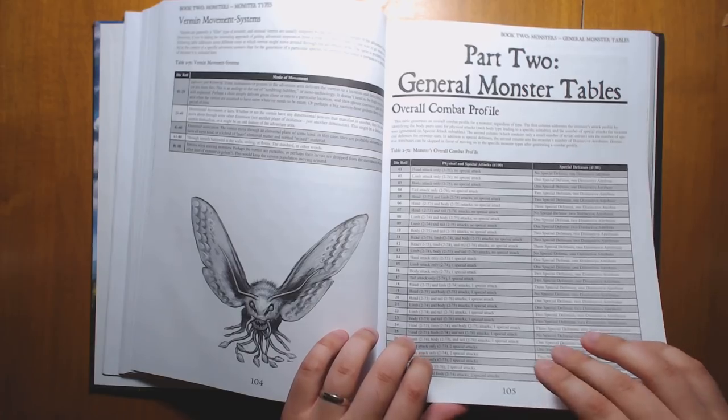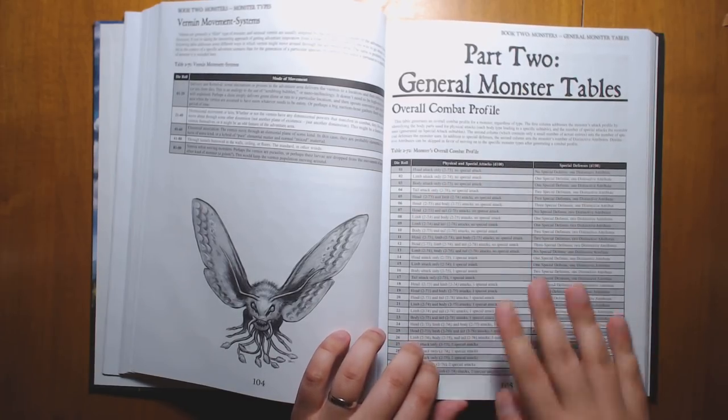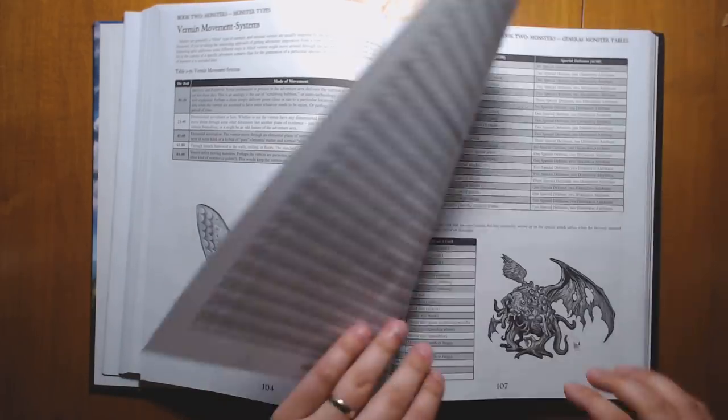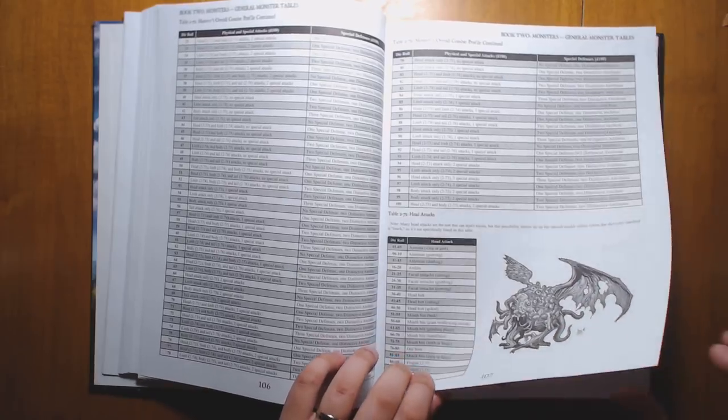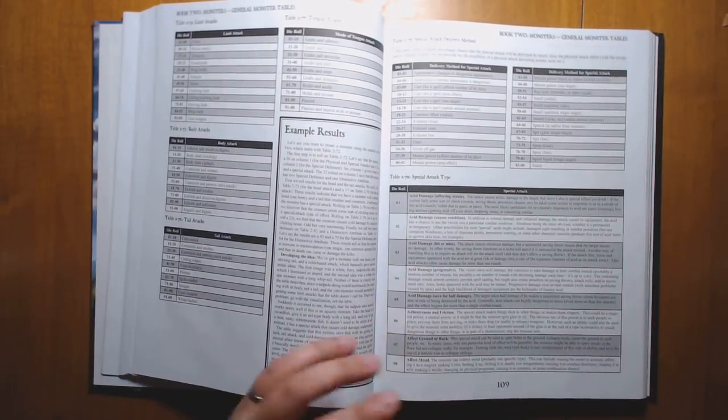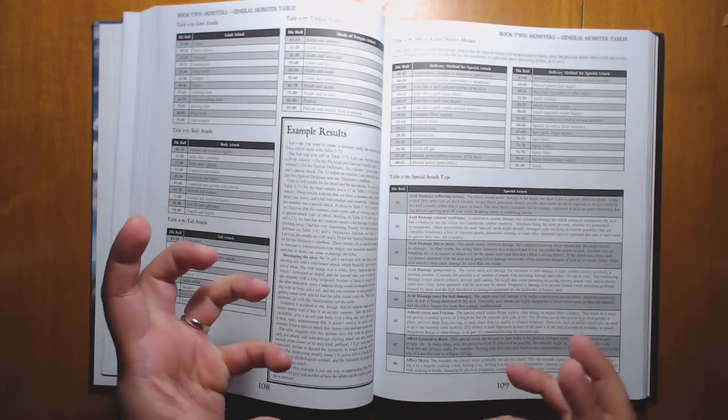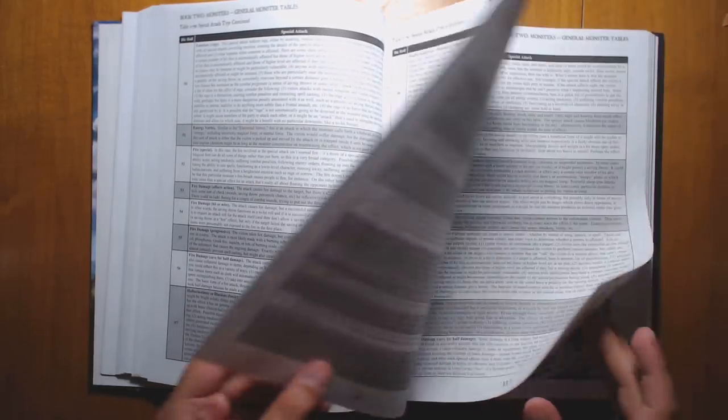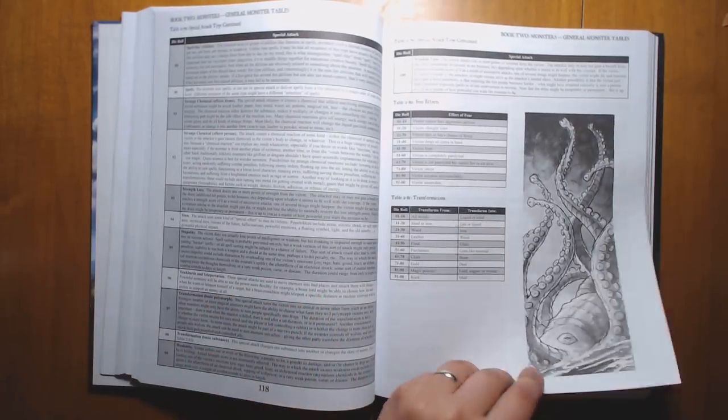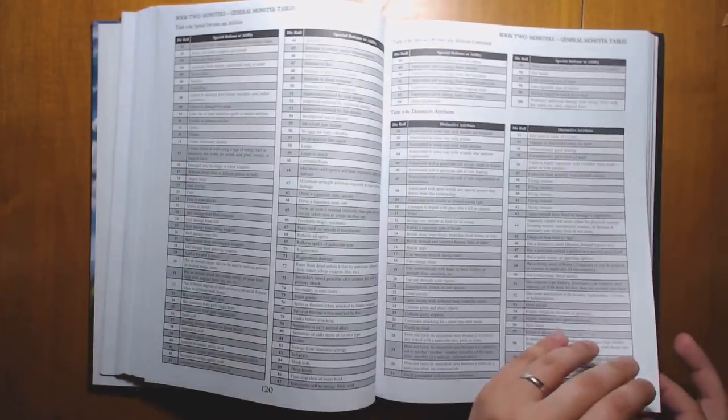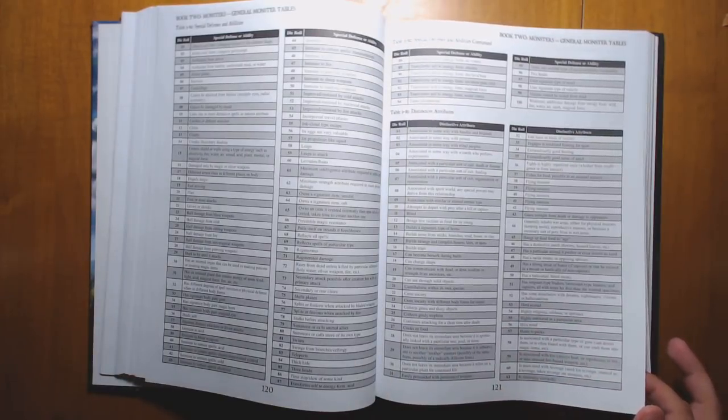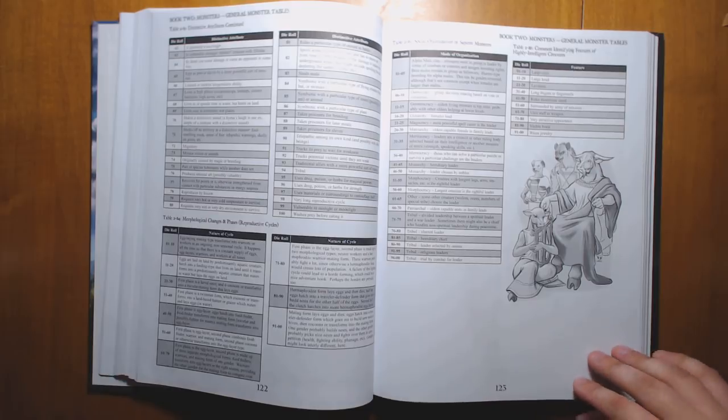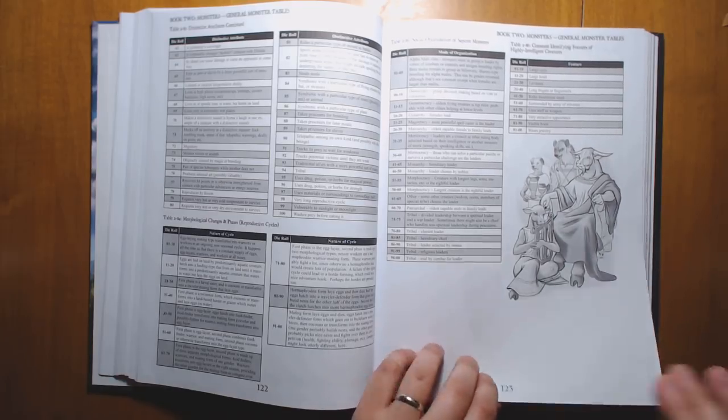We're still in the monster types. There's so much information in here. Every time I open this up, I find a new table that I somehow missed with all sorts of new ideas. It's a great way just to shake things up and to make sure that your adventures don't get stale. Undead creatures, vermin table, general monster tables. So the overall combat profile, great for just creating different types of tactical situations that players are going to run into.